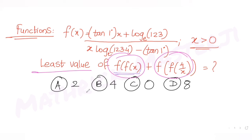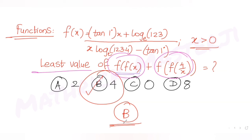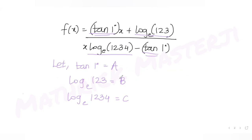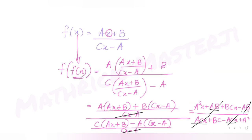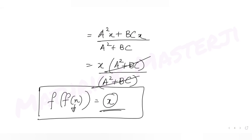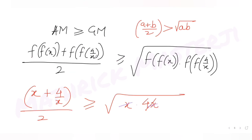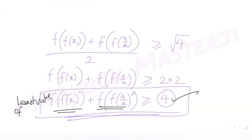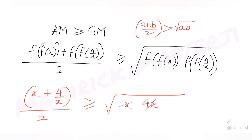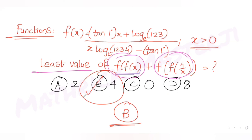The minimum value is 4, which matches option B. To summarize: we substituted constants with alphabets, found f(f(x)) = x and f(f(4/x)) = 4/x, then used the AM-GM property to establish that the least value of the sum is 4. Option B is the correct answer.